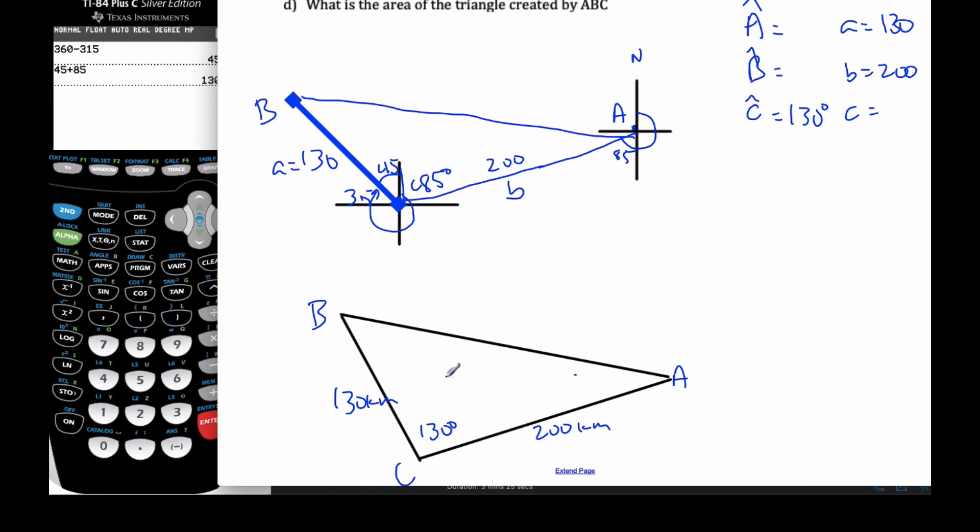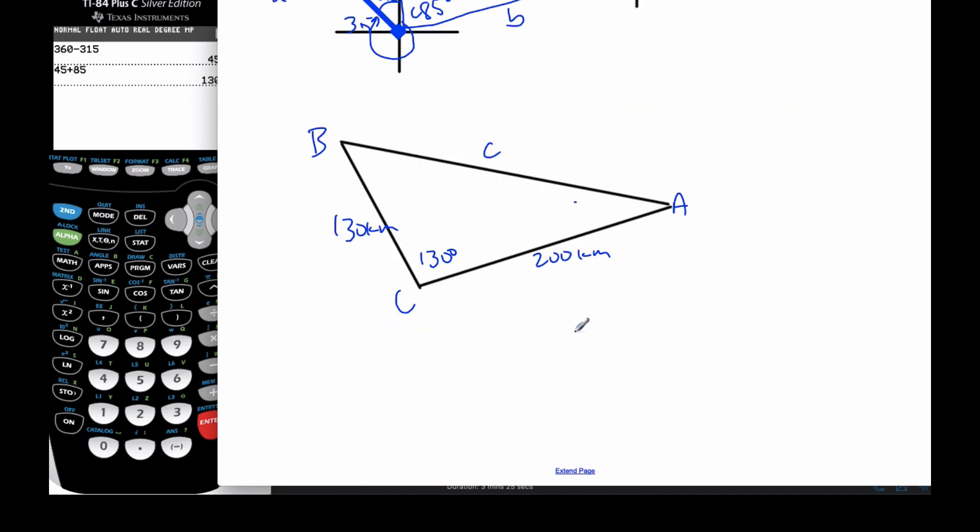Okay, so in order to find little c, which is distance a, b, I am going to use the cosine rule. The cosine rule says c squared is equal to a squared plus b squared minus 2ab, the cosine of c, which you'll be given on your test. And so now I just can say 130 squared plus the 200 squared minus 2 times 130, 200, cosine 130.